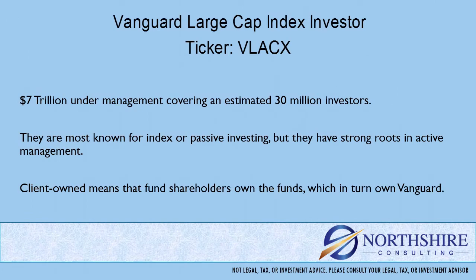There are a couple of things that we look at when we see a simple asset allocation like this. The first is equity to bonds, or stock to bonds. Cash, U.S. bonds, and non-U.S. bonds obviously fall in that bond category. Then we look at the equity exposure. This portfolio is more so weighted in equities, meaning it's going to be a little bit more on the aggressive side. We know over time that equities have outperformed bonds, but they also take a little more risk to do that.